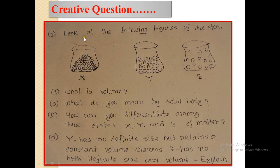Second creative question: Look at the following figures of the stem. Here are three figures, X, Y, and Z. First question: What is volume? What do you mean by solid body? How can you get different states? How can you differentiate among three states X, Y, Z of matter?